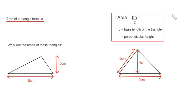The most common formula you can use is this one here. The area is BH over 2, where B is the base length of the triangle and H is the perpendicular height. So you do the base times the perpendicular height, and then you divide the answer by 2.